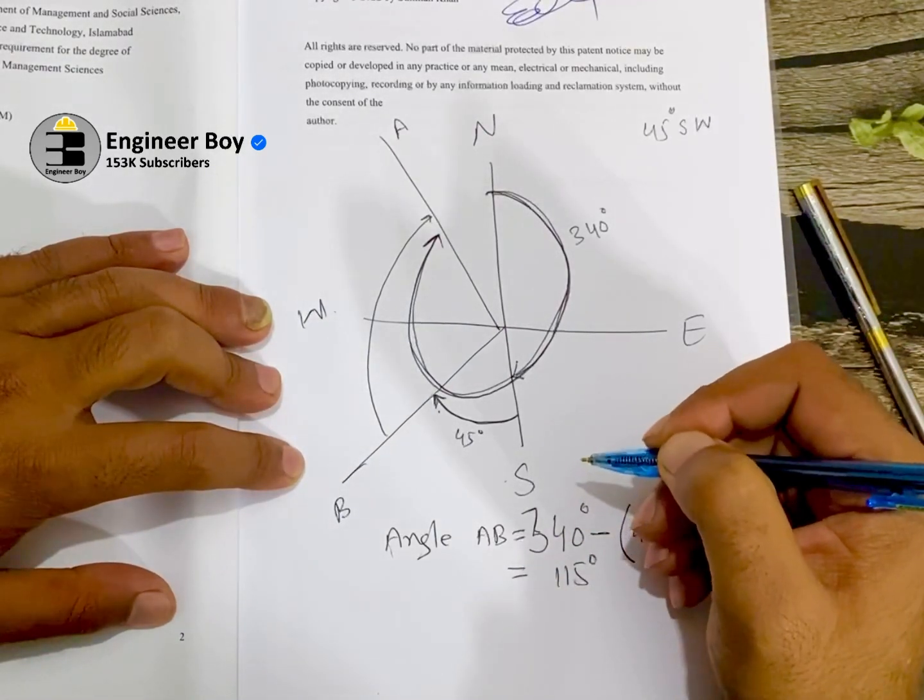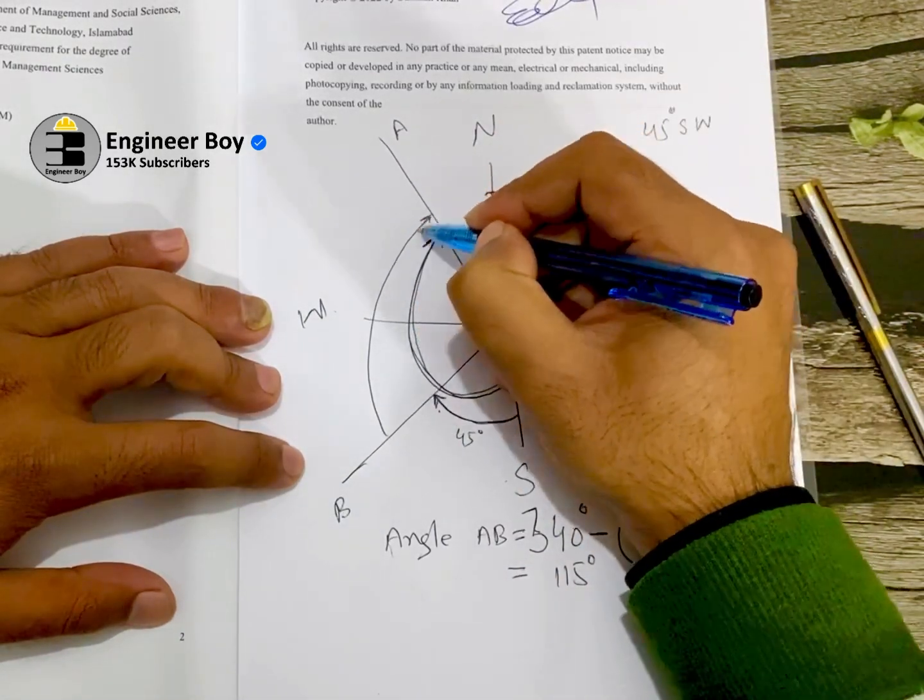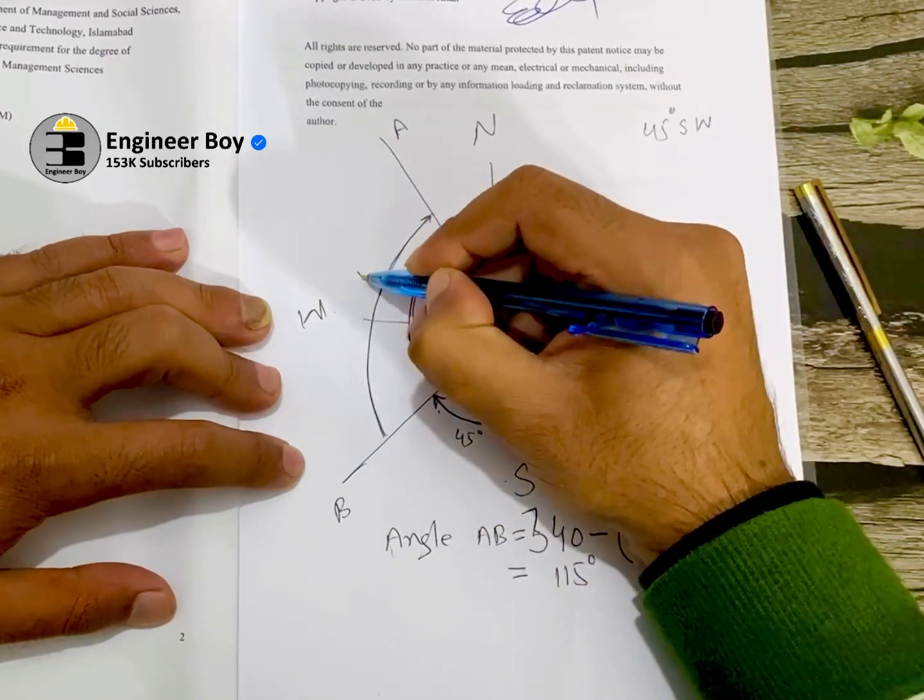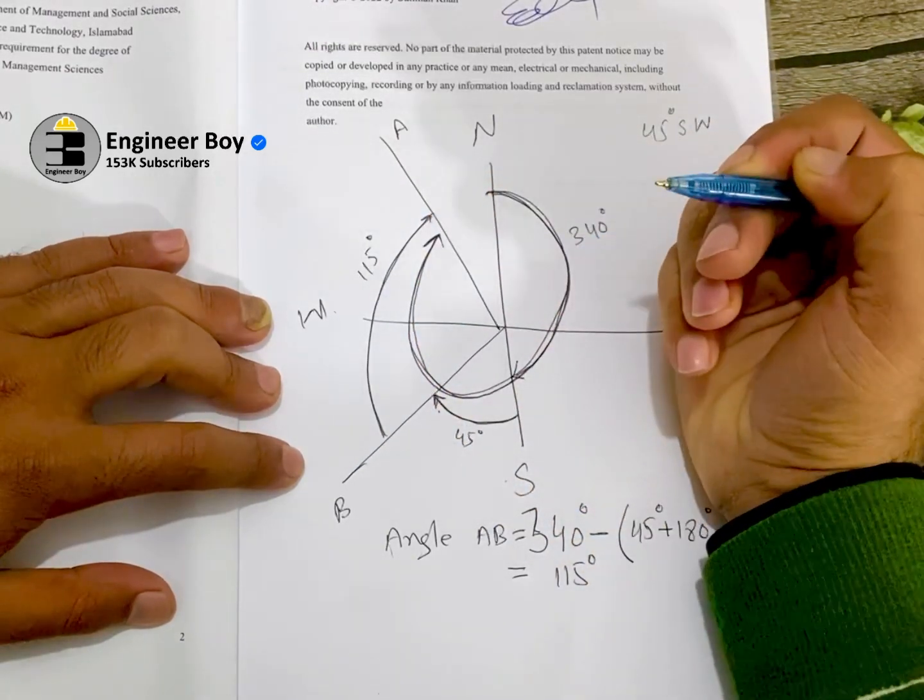So the angle between line AB, which is this one, is 115 degrees. So simple.